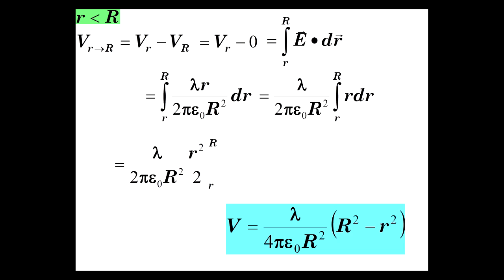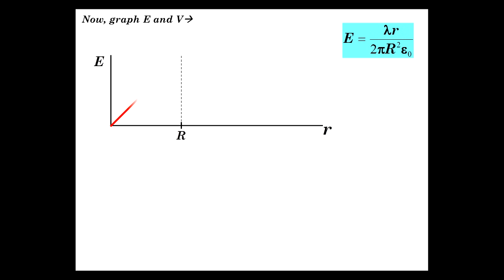So mapping, or shall I say graphing, the electric field and potential. The electric field in all of space. Here was the electric field from 0 to R. Notice it's proportional to r. So there it is. And afterwards, it's inversely proportional to r.